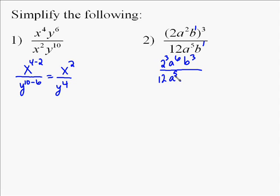And so we're going to have 2 to the 3rd, a to the 6th, which is 2 times 3, and then b to the 3rd because it's to the power of 1. And then that's all over 12a to the 5th, b to the 1st, and you've got to remember it's b to the 1st.